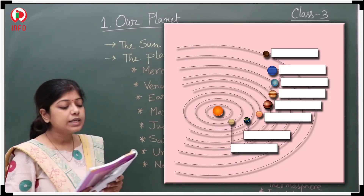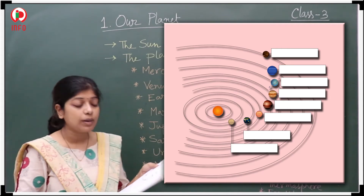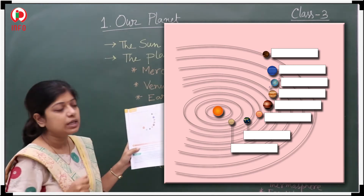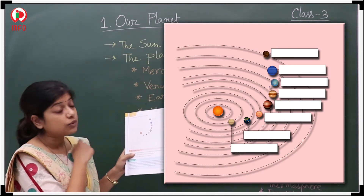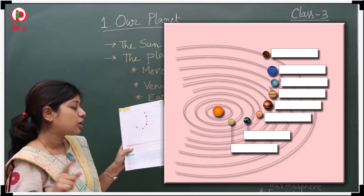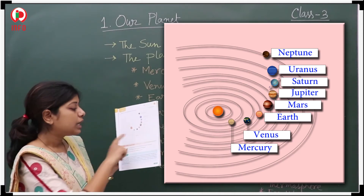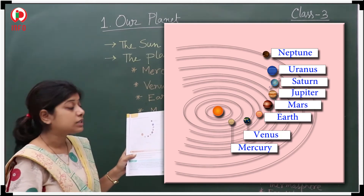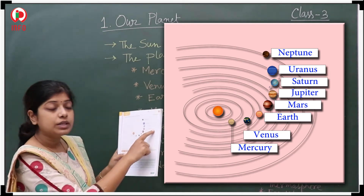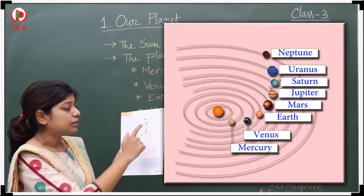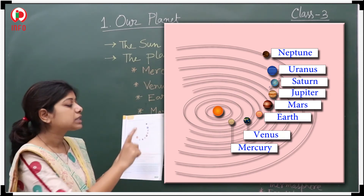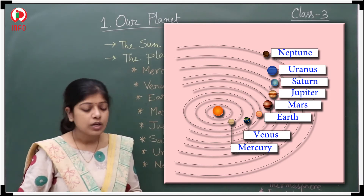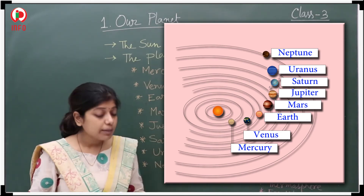Section E: Identify and write the names of the planets in the solar system diagram. In the first orbit, write Mercury; second, Venus; third, Earth; fourth, Mars; fifth, Jupiter; sixth, Saturn; seventh, Uranus; and eighth, Neptune.